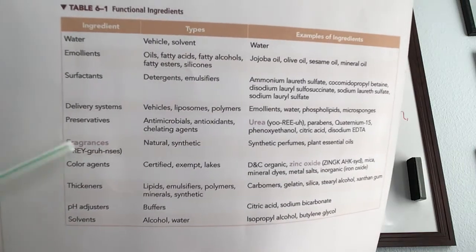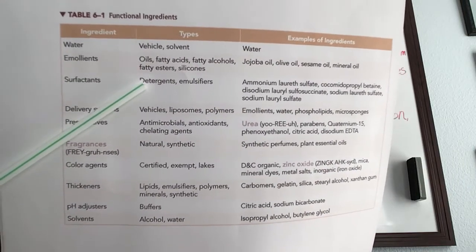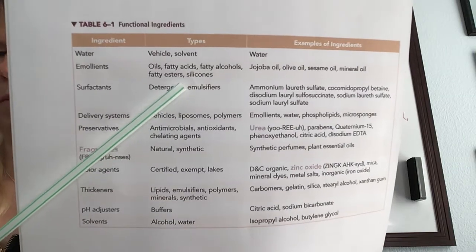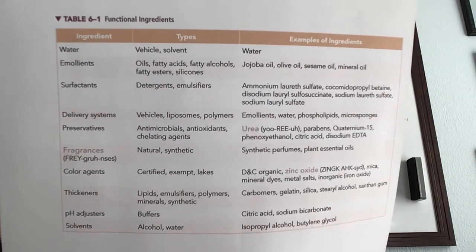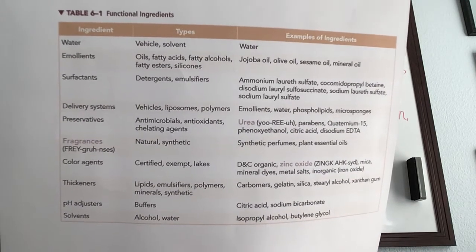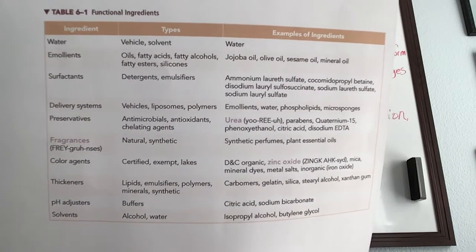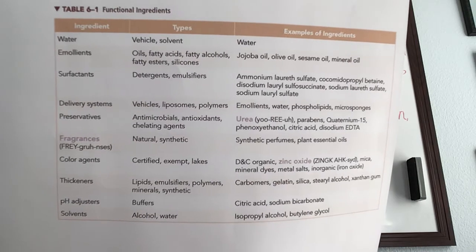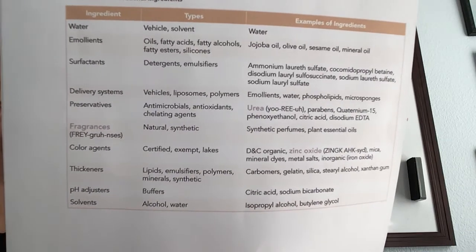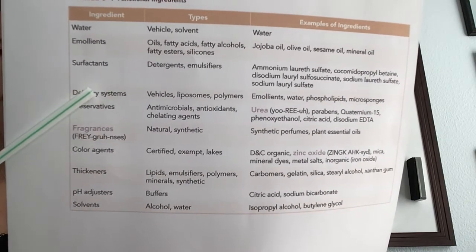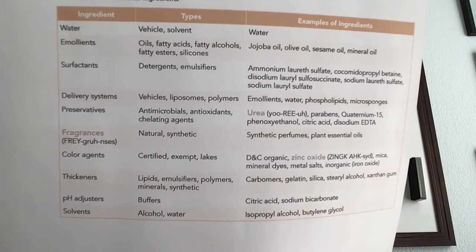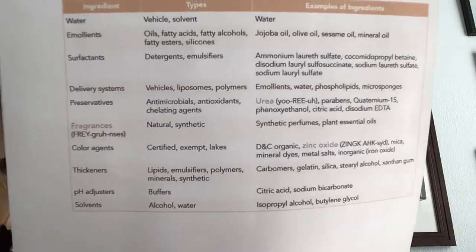Surfactants — you want to know these; they have been on the boards. There are two surfactants: detergents and emulsifiers. Examples include ammonium laureth sulfate, cocamidopropyl betaine, disodium lauryl sulfosuccinate, sodium laureth sulfate, and sodium lauryl sulfate. For delivery systems, we have vehicles, liposomes, and polymers. Examples include emollients, water, phospholipids, and micro sponges — we'll talk more about those later.